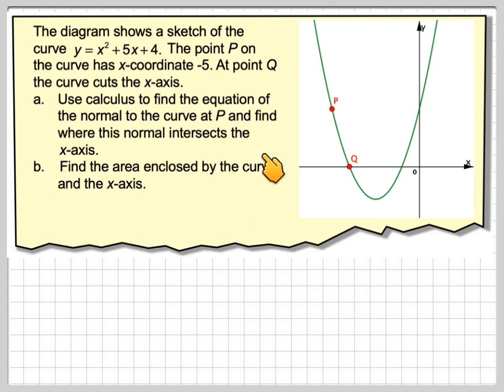So the normal will be a line here which is perpendicular to the tangent. In part B, it says find the area enclosed by the curve and the x-axis.